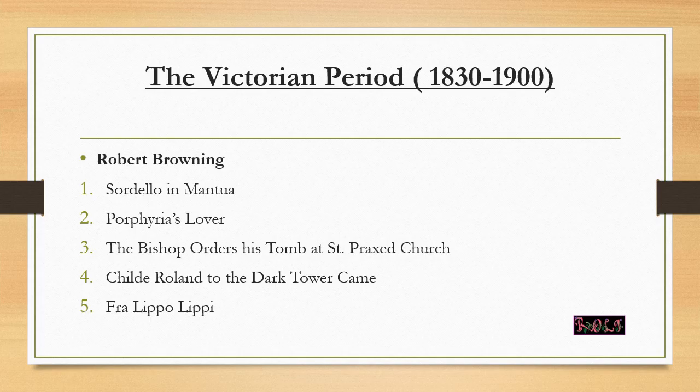After the Romantic period we have the Victorian period, when Queen Victoria ruled England. This was a contrast to the Romantic period — Romantics were rebellious, but the Victorians were more restrained and believed in compromise, wanting to strike a balance between culture, art, and literature. The notable poets of this era are Robert Browning, Alfred Lord Tennyson, and Elizabeth Barrett Browning.